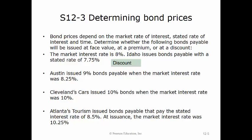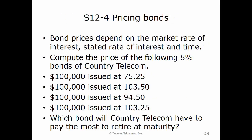Austin issued 9% bonds payable when the market rate was 8.25%. Since the bonds pay higher than the market rate, they will sell at a premium. Cleveland's Cars issued 10% bonds when the market rate was also 10%, so they will sell at par or face value. Atlanta's Tourism issued bonds at a stated rate of 8.5%, but the market rate was 10.25%, so these bonds will be issued at a discount.